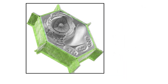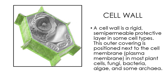A cell wall is a rigid, semi-permeable protective layer found in some cell types. This outer covering is positioned next to the cell membrane in most plant cells, fungi, bacteria, algae, and some archaea. Animal cells, however, do not have a cell wall. The cell wall has mainly important functions including protection, structure, and support.